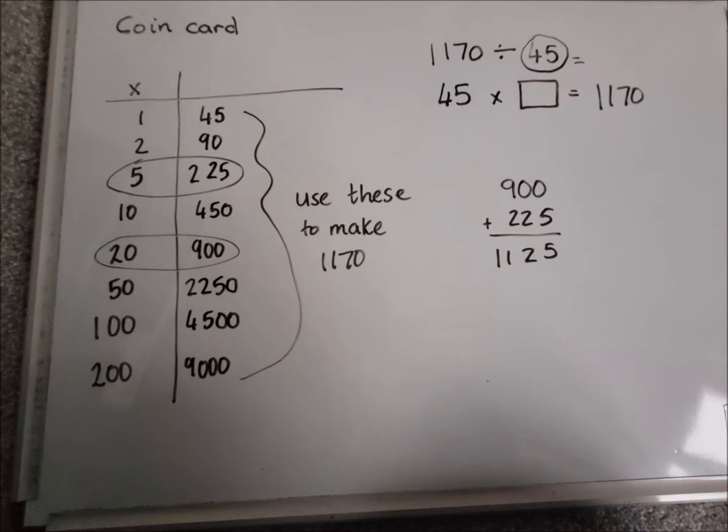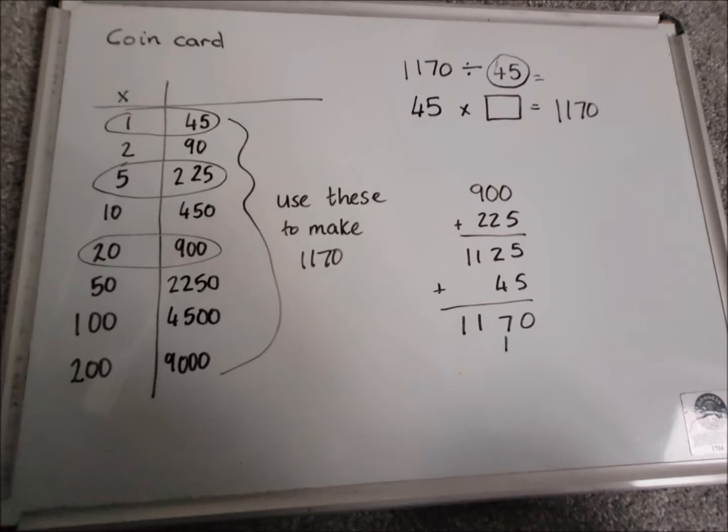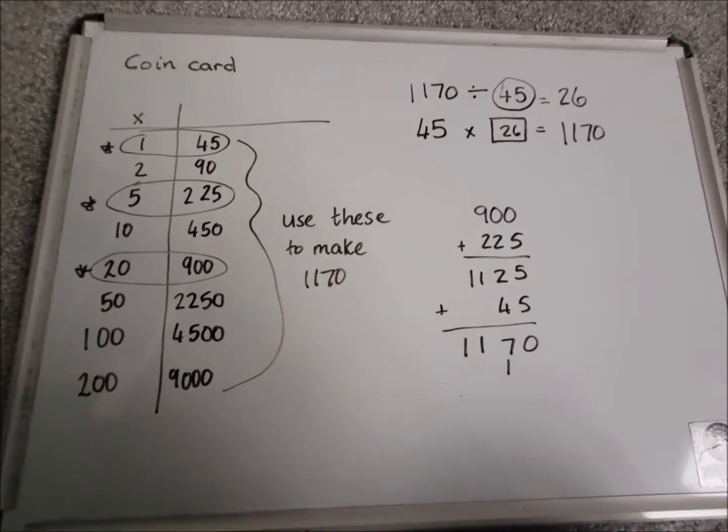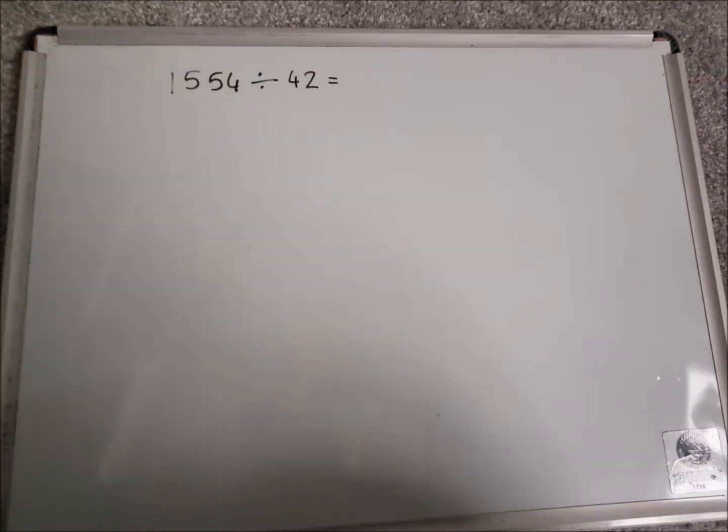So I've put 900 and 225 into a column sum. When I add those up, I get 1125. So I'm still a little bit away from that target of 1170. So I'm going to add on the 45, the 1. When I add those together, I get 1170, so I'm bang on my target. So to find the answer, I see that I've used the 20, the 5, and the 1. So if I add up 20, add 5, add 1, I get 26. So 26 is my answer. So 1170 divided by 45 is 26, or 45 times 26 is 1170.